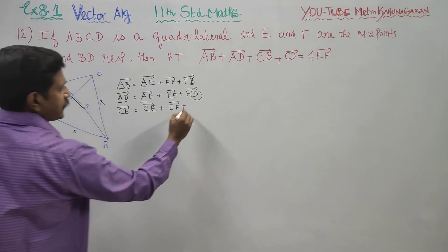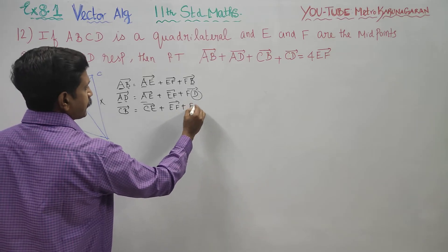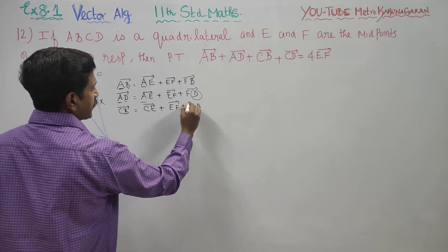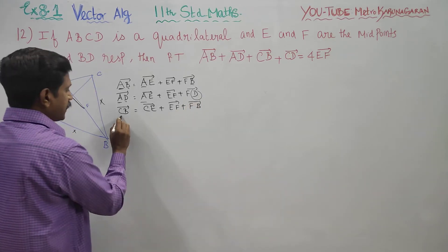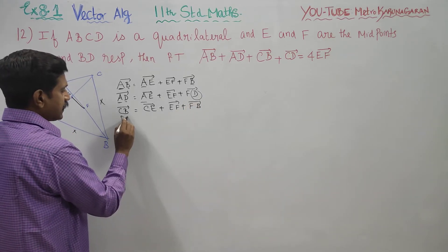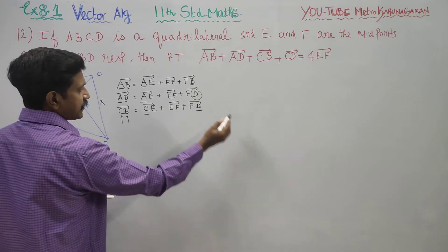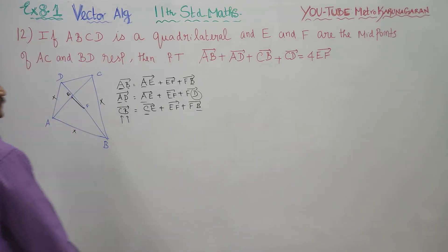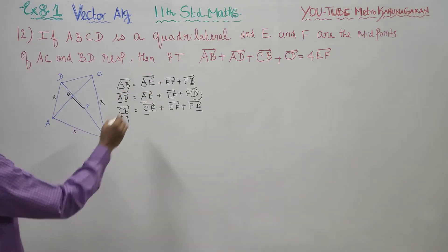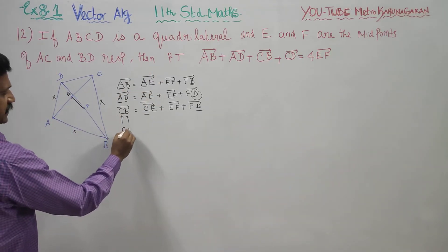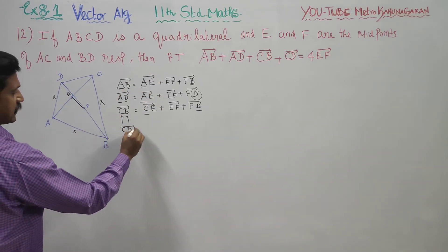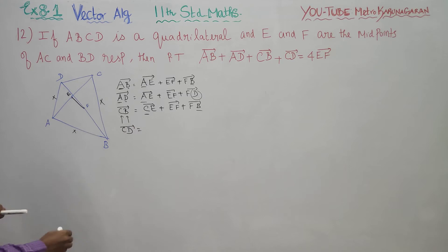FB: starting point is C, ending point is B. So CB vector equals CE plus EF plus FB. Last, CD vector.